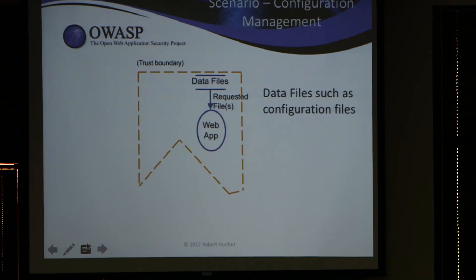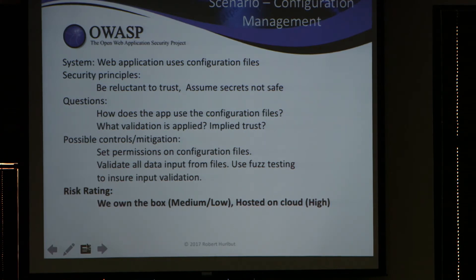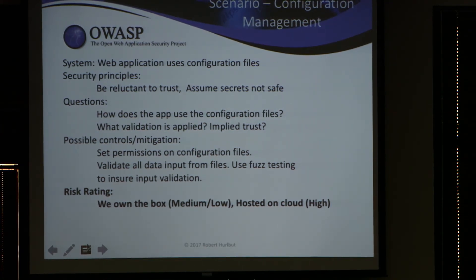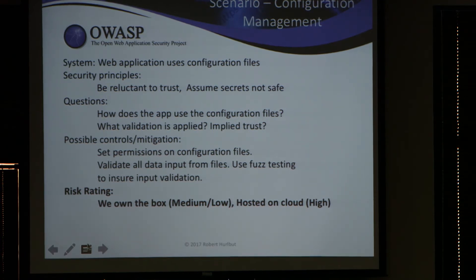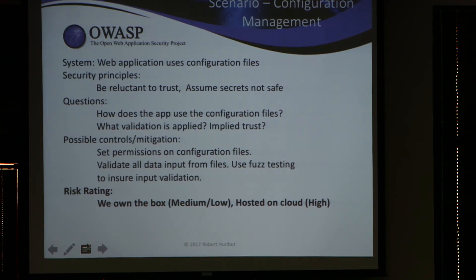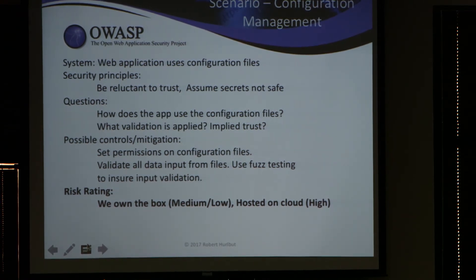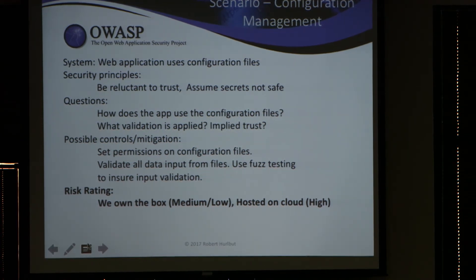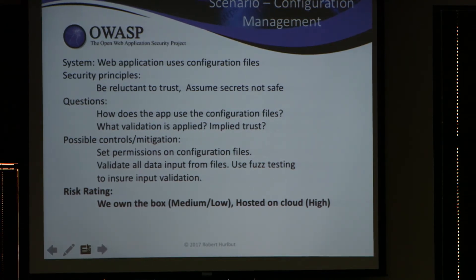Going back to our configuration management example for risk: if you own the box and control who can change the file, maybe the risk is medium or low. But if it's hosted on a cloud or managed by someone else where you have less control, the risk is higher and you need stronger controls. That completes a full threat model: understanding the system, determining threats, mitigations, and risk.